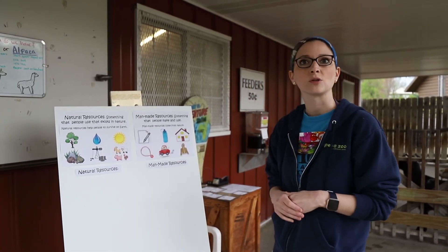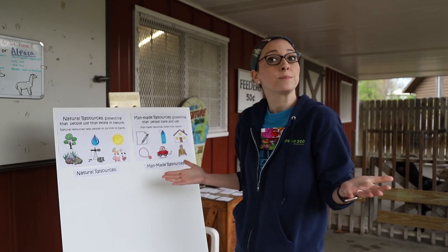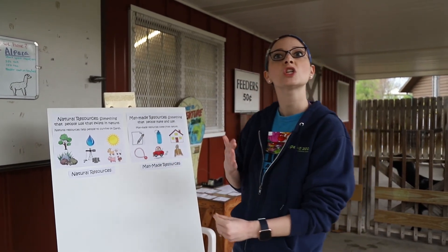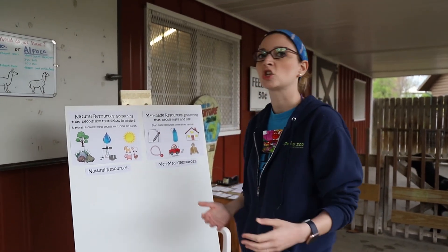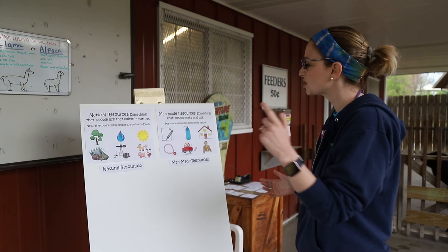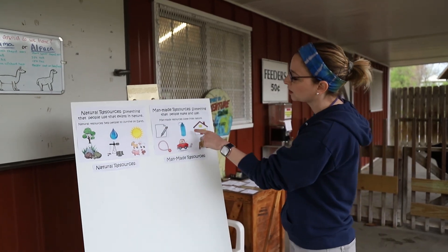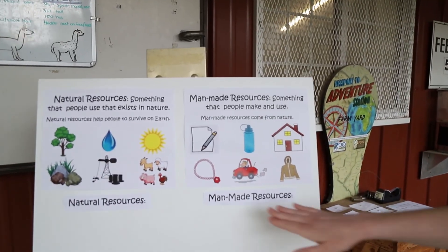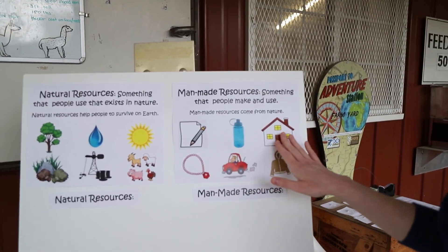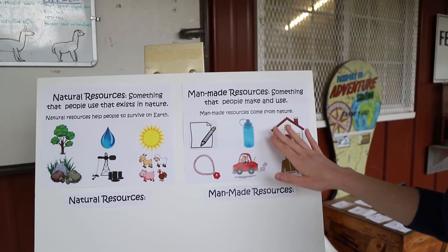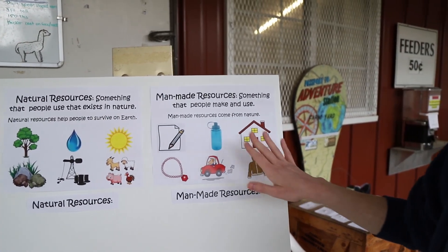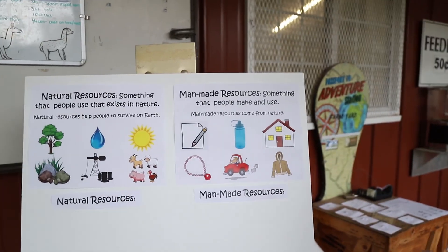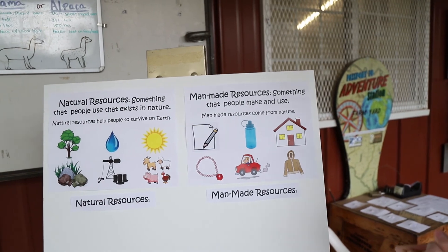Water bottles — those are made from plastic, so we have to use machines to change them. You can see houses here. The materials for houses come from nature. Things like trees are used to build houses.